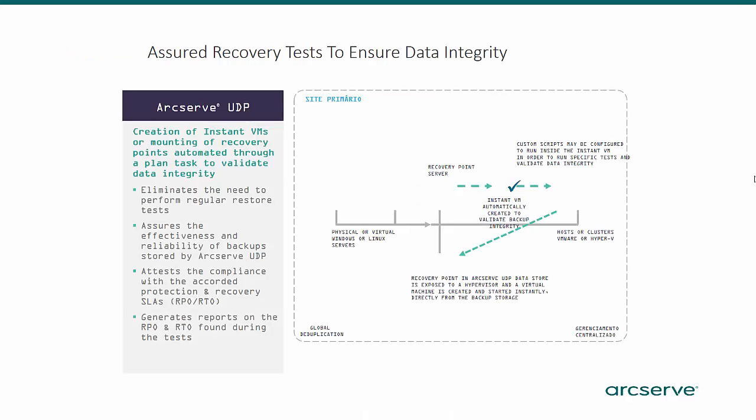A new assured recovery task has been added in the 6.5 release. ArcServe UDP Assured Recovery allows you to view the health status of the recovery points. Integrity and recoverability of recovery points are tested on a scheduled basis. There are two methods. The first tests the boot up, requires vSphere or Hyper-V, and can be used to measure RTO. This method can be resource intensive and we recommend using it only on critical systems or critical data sets, daily or weekly. Do not use this on every node or every data set. The second method, Instant VHD, does not require access to the hypervisor and can go directly to the recovery point and mount as a virtual full.